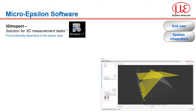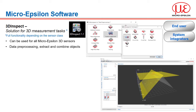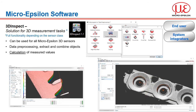Soon to be released is the 3D Inspect software package, which gives the ability to make 3D measurements from the point cloud and set OK and not OK conditions. It can be used for all MicroEpsilon 3D sensors, but the functionality is limited depending on whether you use the 3500 series or the 3510 sensors. It allows for adjustment and alignment of the sensor together with data pre-processing, extraction and combination of measurement objects. From those objects you can then make calculations of further measured values and also configure the measured value transfer and the outputs from the software.